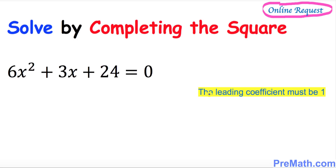The very first step is we want to make sure that our leading coefficient must be 1. In our case our leading coefficient is 6. We want to make it 1, so we are going to divide by 6. If you divide by 6, you must divide each and every term across the board by 6.